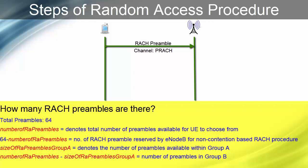Now, UE needs to decide the group from which it needs to choose the preamble, Group A or Group B. The group is decided on the basis of the size of the L3 or L2 message to be sent to eNodeB. For example, at the time of registration, L3 message RRC connection request is sent to eNodeB. If the size of RRC connection request is greater than SIB2 parameter 'message size Group A', preamble will be selected from Group B, else preamble will be selected from Group A. From the selected group, UE randomly chooses a preamble.